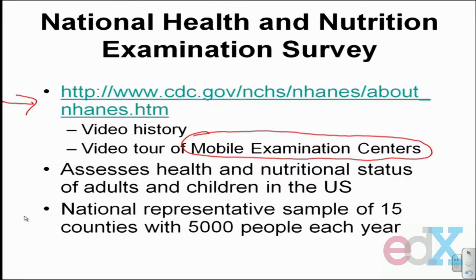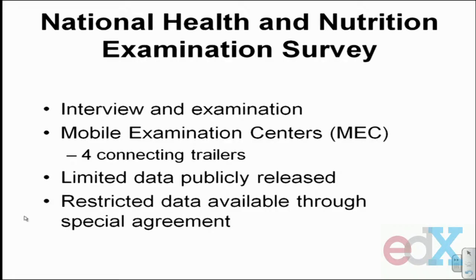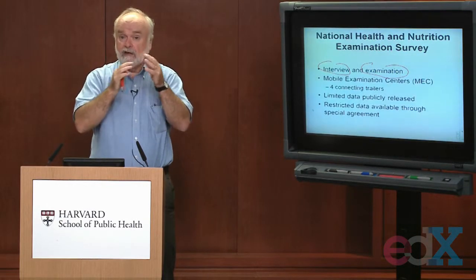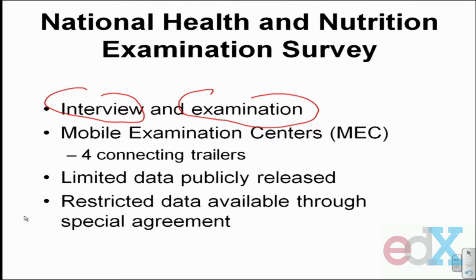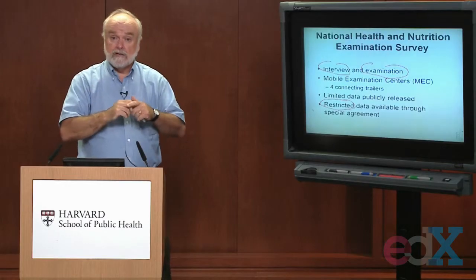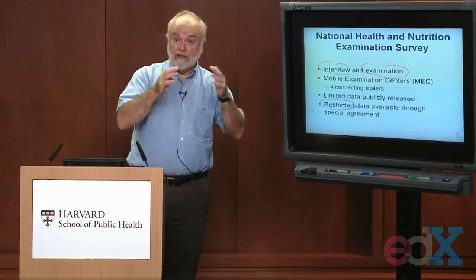The purpose of the NHANES is to look at health and nutrition of the United States, both adults and children. Each year, they visit approximately 15 counties in the United States and enroll and interview around 5,000 people. The process involves two stages: a personal interview and an examination done at these mobile examination centers. Data from the NHANES is made publicly available to anyone, not just those living in the United States. The publicly available data set is limited, but anyone can go to their website and download it. Additional restricted information is available if you fulfill a special agreement with the NHANES.